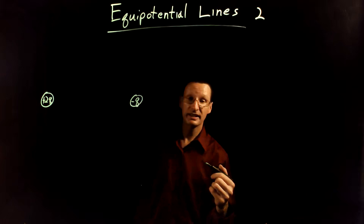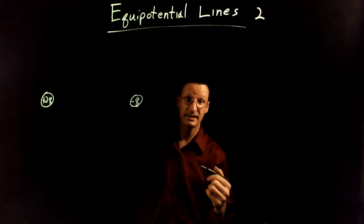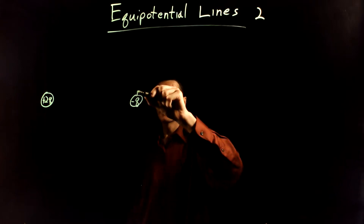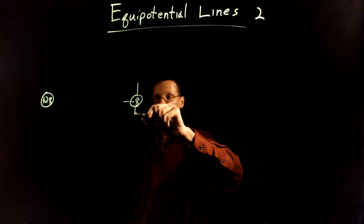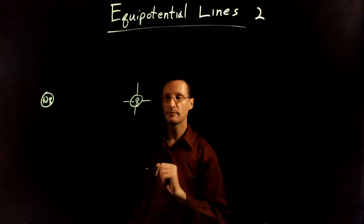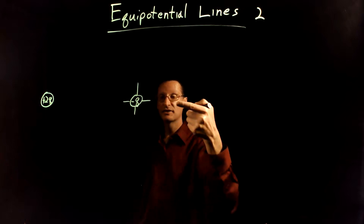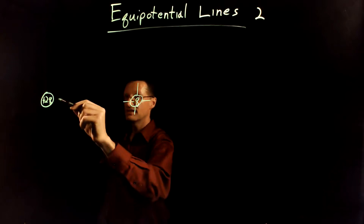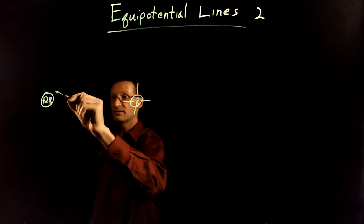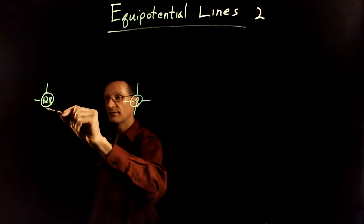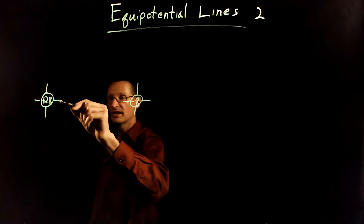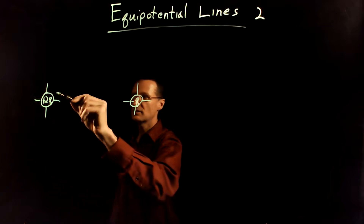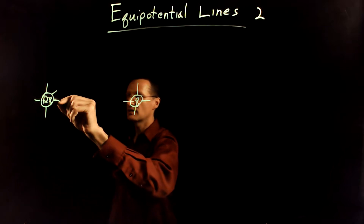Let's think first about the electric field lines — I think it's a little easier to think about those. So let's just draw some electric field line stubs for this one. We know the electric field lines are going to be going into this negative charge. This is a positive 2q charge, so it has twice as much charge, meaning I need twice the field lines here.